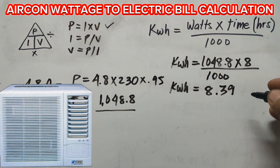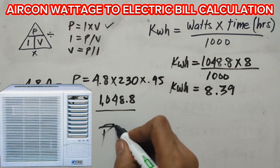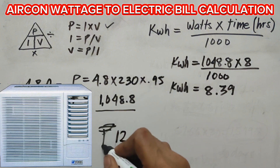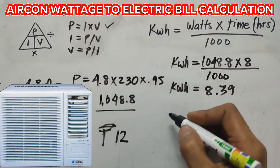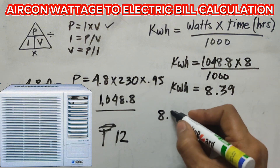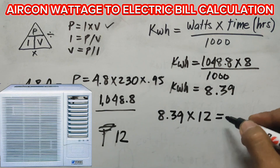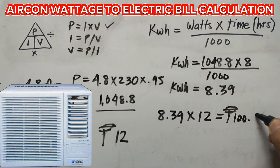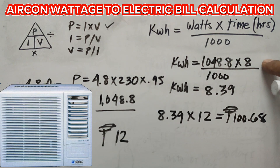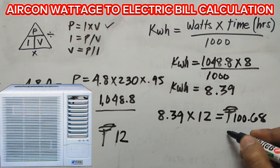Now that we have the kilowatt-hour value, we're going to multiply it by the electricity rate. For example, in our province the price is 12 pesos per kilowatt-hour. If in your area it is 10, just put 10. So we multiply 8.39 by 12 pesos, and the answer is 100.68 pesos for 8 hours of use. This is the cost per day.